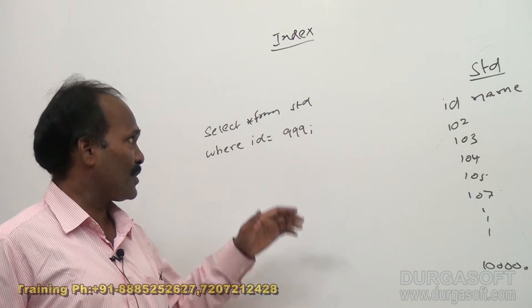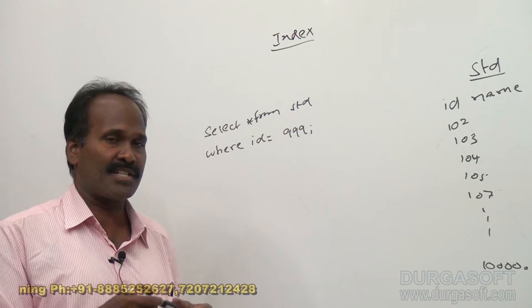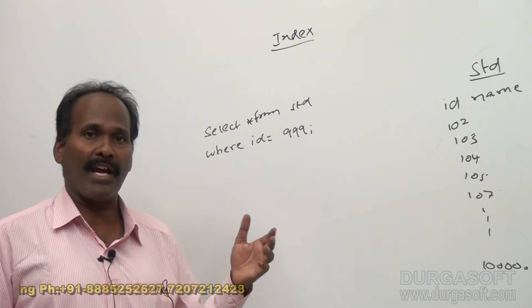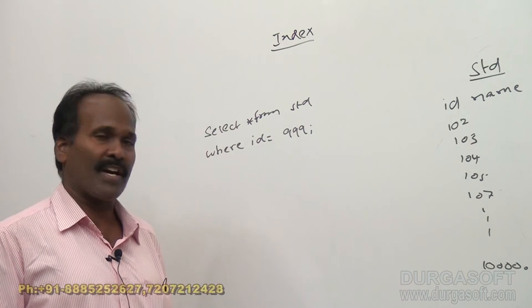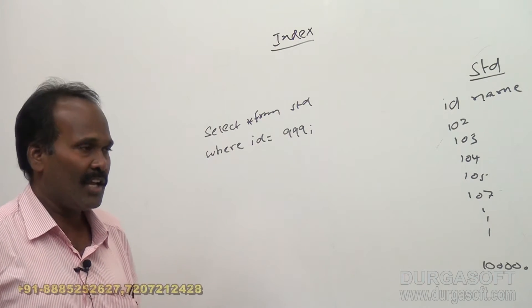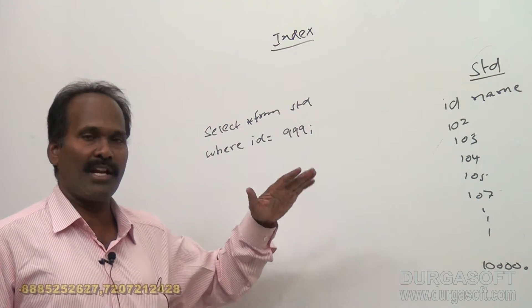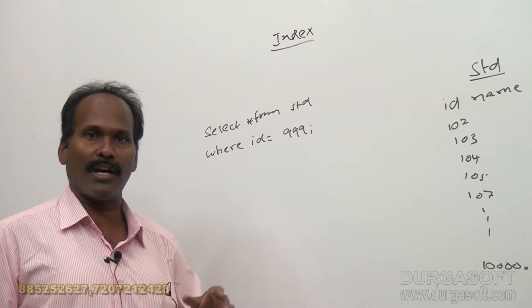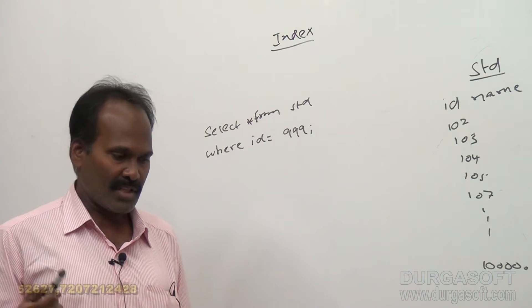Instead of searching the entire table, we can create an index for a table. By looking at the index, Oracle will automatically fetch the row with the corresponding row ID from the table.